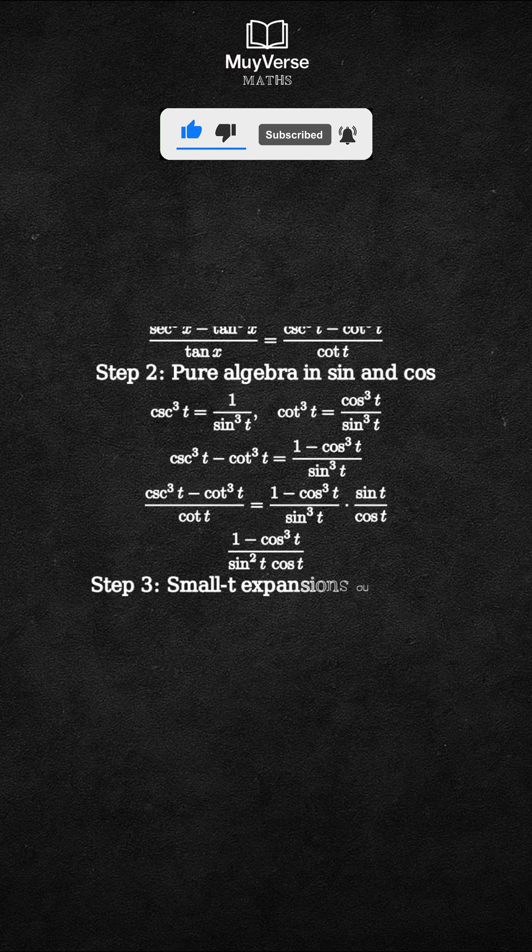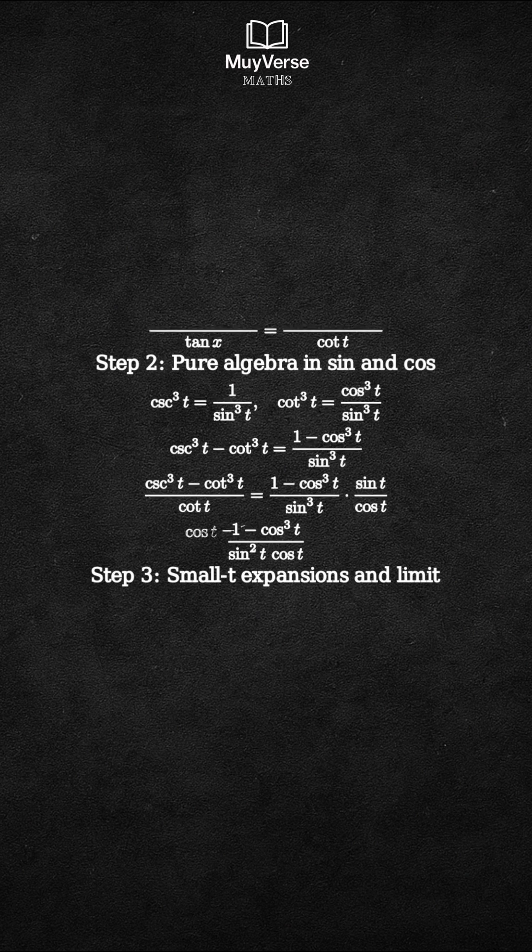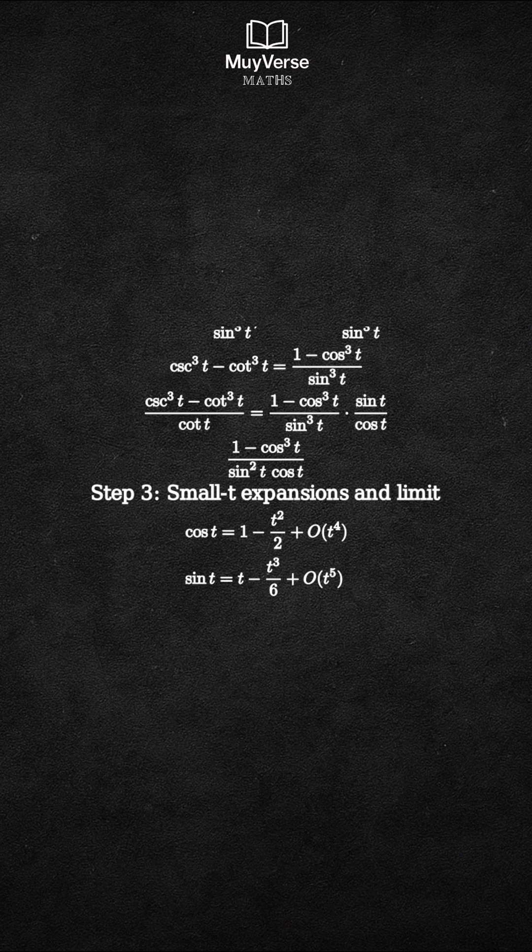Step 3: Use small t expansions. As t goes to 0, cos t = 1 - t²/2 plus higher order, and sin t = t - t³/6 plus higher order.